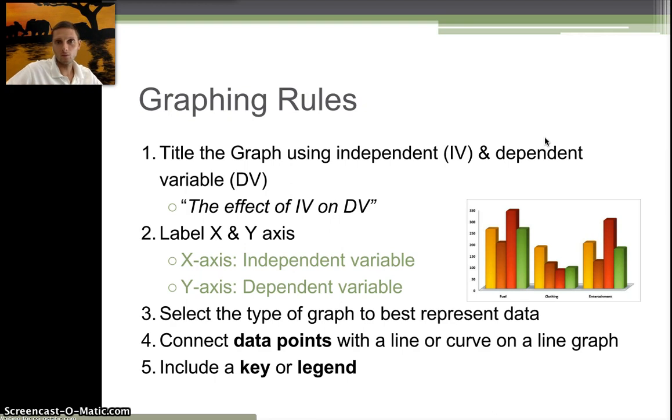There are rules for making graphs. First, title the graph using the independent variable and dependent variable. Most often the title will be the effect of whatever your independent variable is on the dependent variable. The axes should be labeled such that the x-axis is the independent variable and the y-axis is the dependent variable. If you know your independent and dependent variables, it makes it very easy to label the axes and give your graph a title.